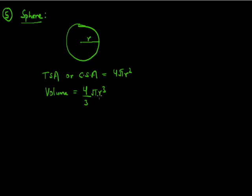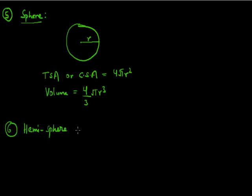By keeping the value of R, we can easily find out the volume and the curved surface area. The next 3D figure is the hemisphere. A hemisphere is actually the half sphere — that is, if the sphere is cut in between, it actually forms the hemisphere.